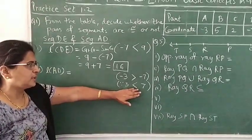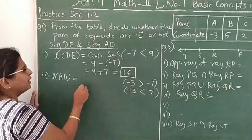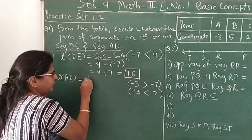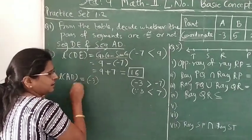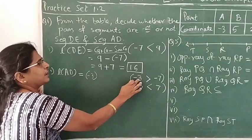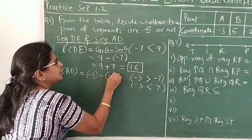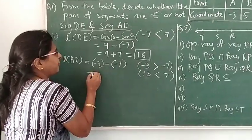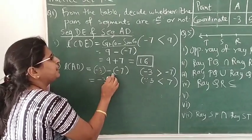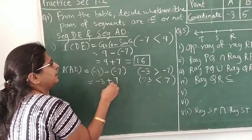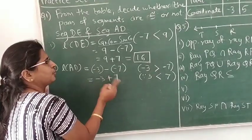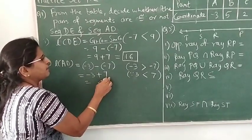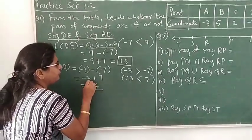To find this distance we use the formula: greater coordinate minus smaller coordinate. What is the greater coordinate? Minus 3. Subtract the smaller coordinate minus 7. Open the bracket and simplify: minus 3 minus minus 7 becomes minus 3 plus 7. Now you have to do subtraction since the signs are different. 7 minus 3 is 4. As 7 is bigger, its sign is positive, so the distance is 4. So we have got these two distances: length DE and AD.